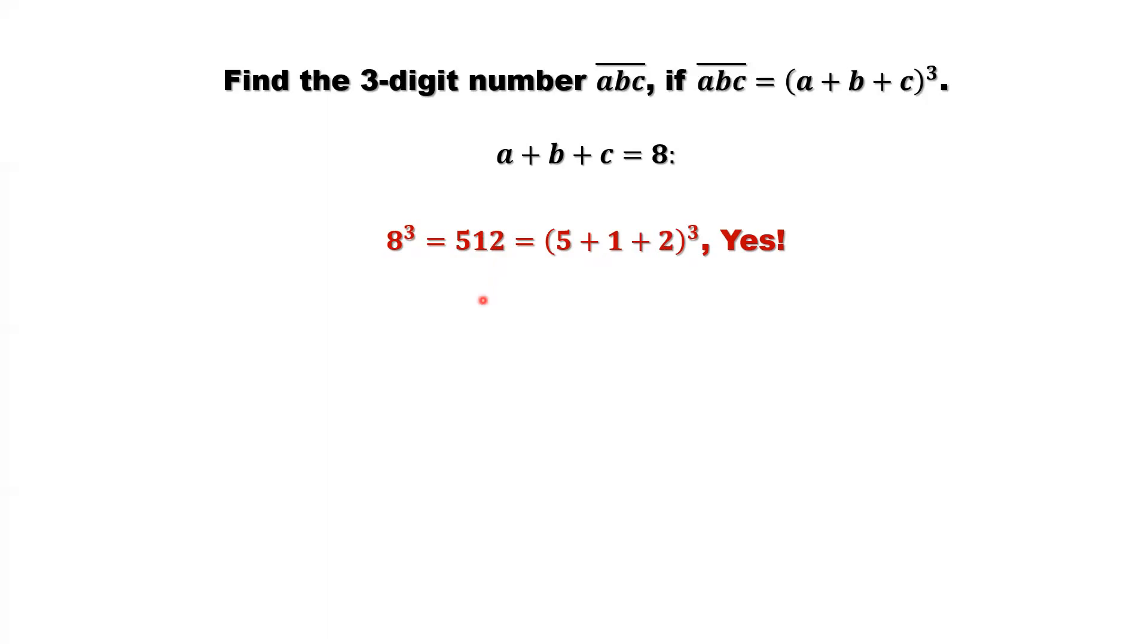The last one to check is A plus B plus C equals 9. 9 to the power 3 equals 729. Sum of this three-digit number: 7 plus 2 plus 9 is 18. 18 to the power 3 is not 9 to the power 3. So the three-digit number 729 is not the answer.